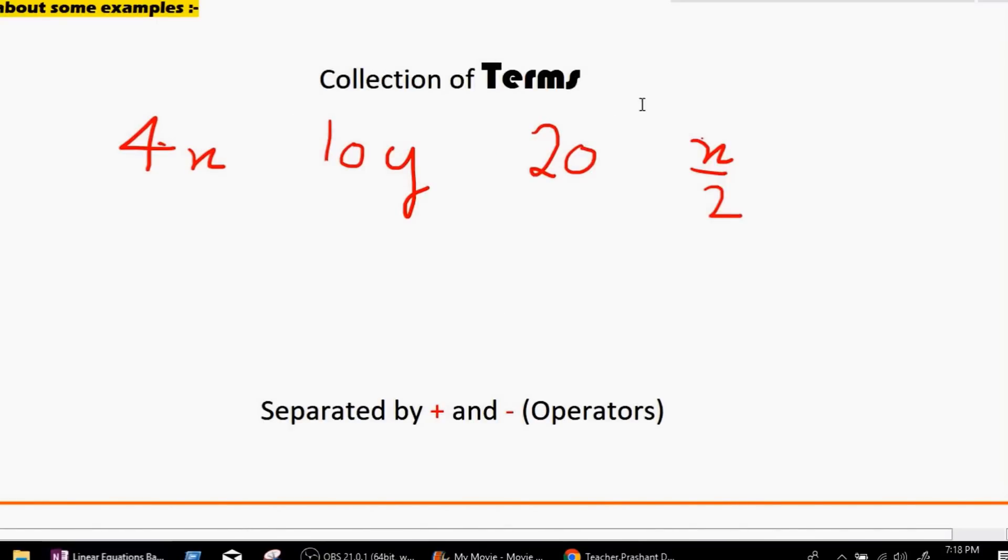So we got a collection of terms right here. So we can say that 4x is a term, 10y is a term, 20 is a term and x over 2 is a term. Now we are done with the top part of the definition which is collection of terms. Now let's move on to the bottom where it says separated by plus and minus operator. So let's go separate all those terms by plus and minus operator. So I am going to put random minus and random plus. So as we can see, all these terms are actually separated by plus and minus operators.